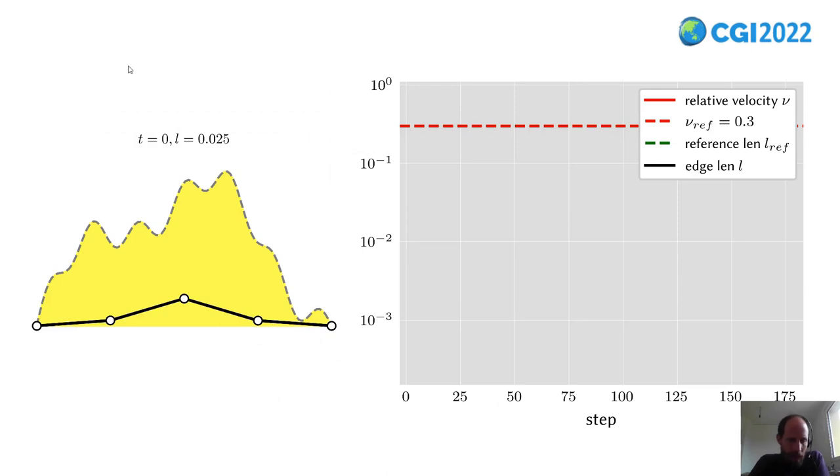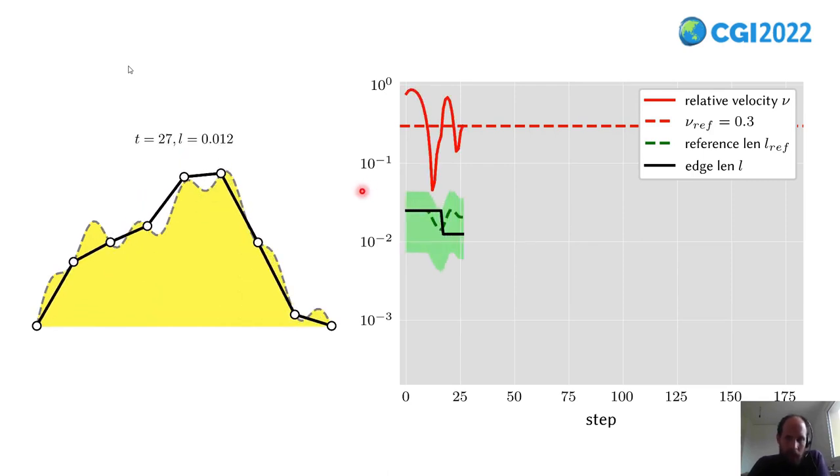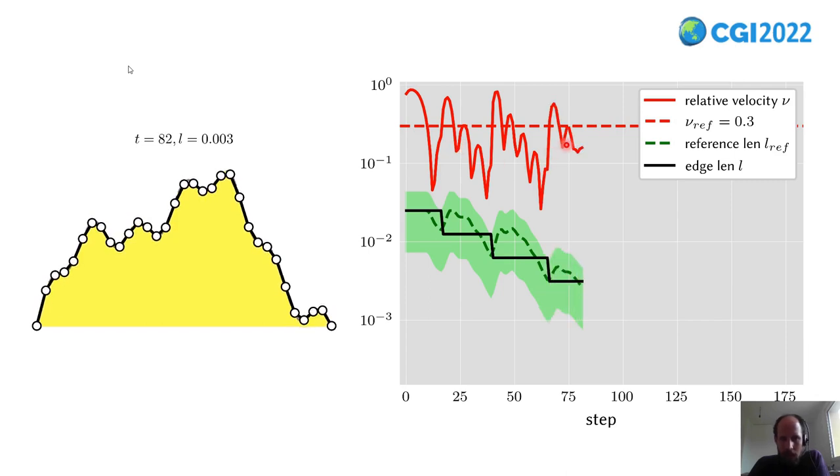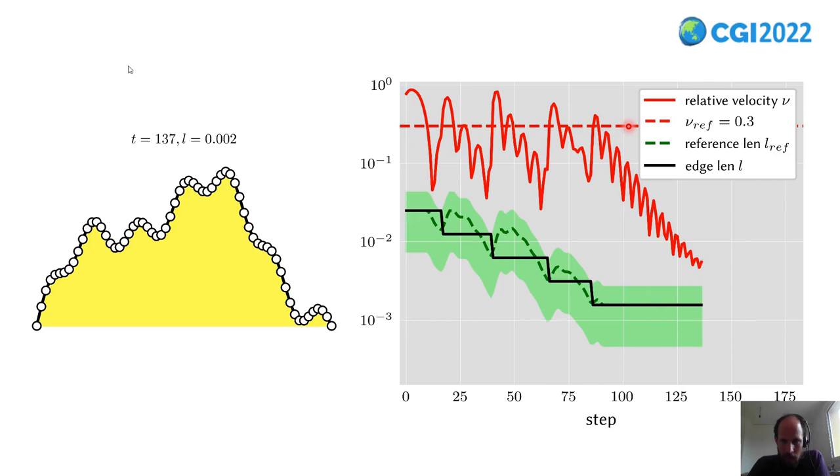That was a lot of theory. Here's a practical example. It's just a toy example with a one-dimensional mesh that is optimized. And you can see the red line—this is the relative velocity. And the controller tries to keep this velocity close to the dashed line here, which is just a parameter, in this case 0.3.